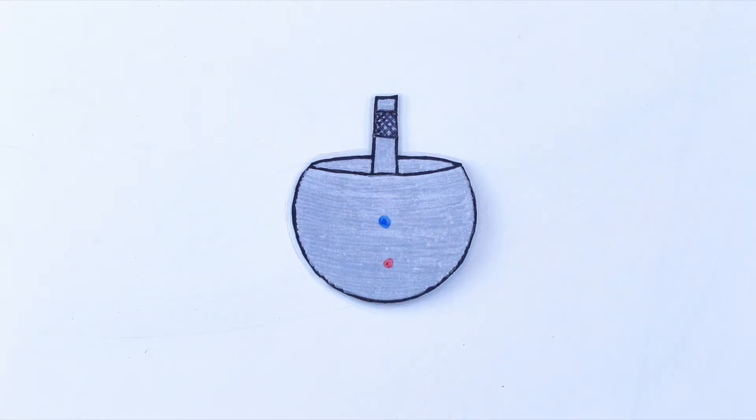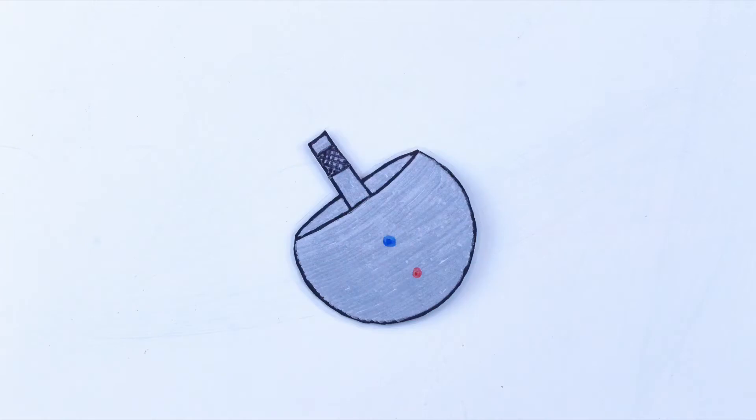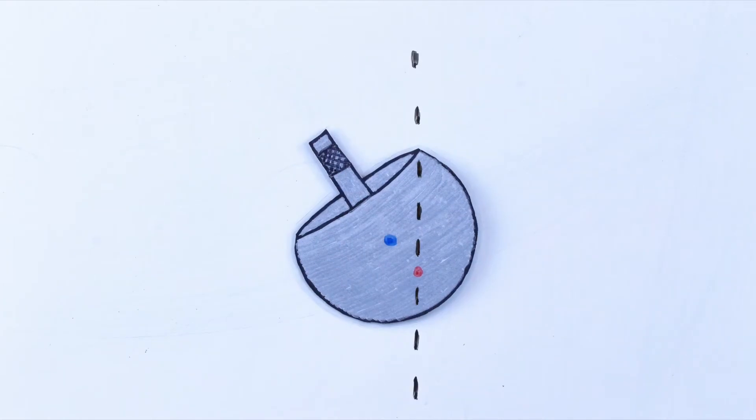So you can't spin the tippy top perfectly up and down. It's going to be more at an angle. Now imagine a line going vertically through the center of mass. This is its rotational axis.